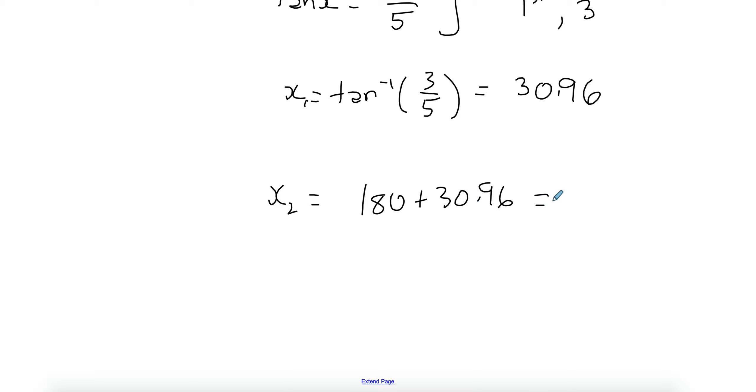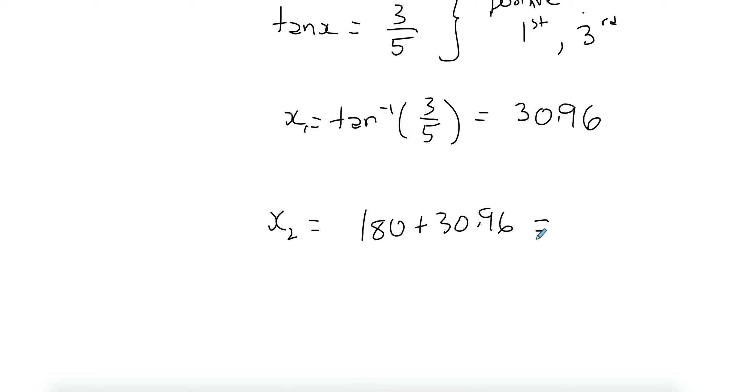And then my third quadrant is going to be 180 plus that. So in your calculator, just add more decimal places. Even when you're here, just add more decimal places. So 180 plus your answer, that's going to give you 210.96.